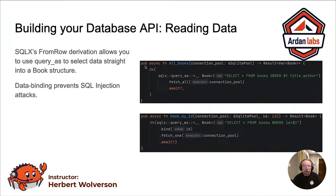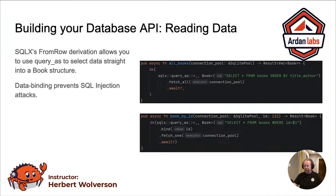So you create a public async function called `all_books`. It will receive a connection pool. A connection pool is designed for you to either send by reference or clone around — it's got an Arc behind the scenes, designed to be easy to spread around. Because it's an Arc behind the scenes, you can be sure there's only one connection pool and you're not going to accidentally make another 50 connections to your database in different parts of your program. And we're going to return a vector of books wrapped in a Result, so we have a chance to record if something went wrong.